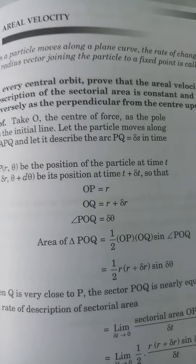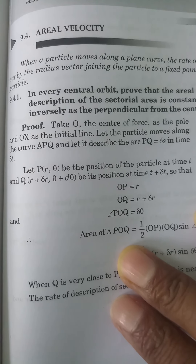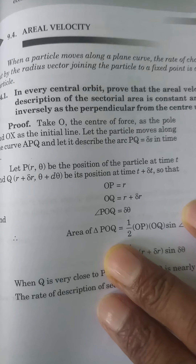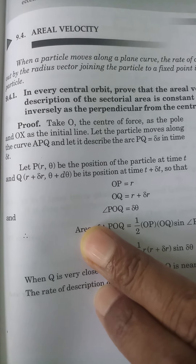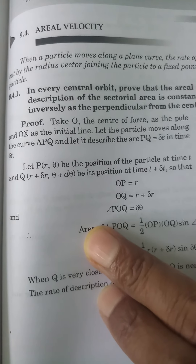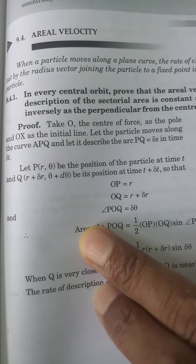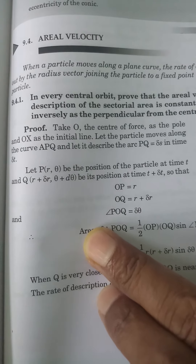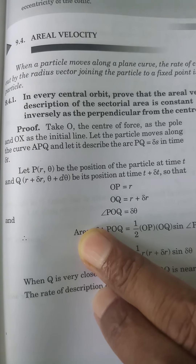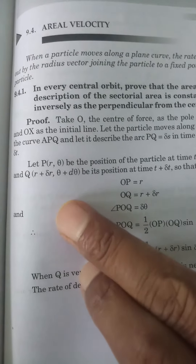Proof: Take O, the central force, as the pole and OX as the initial line. Let the particle move along its curve APQ, and let it describe the arc PQ equal to δS in time δT.